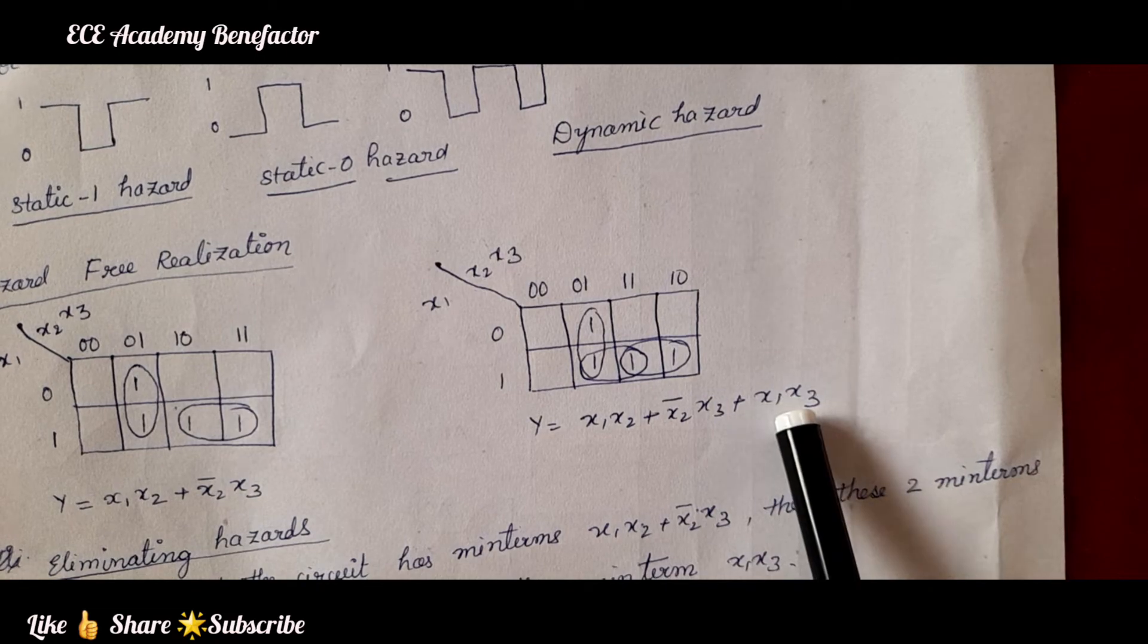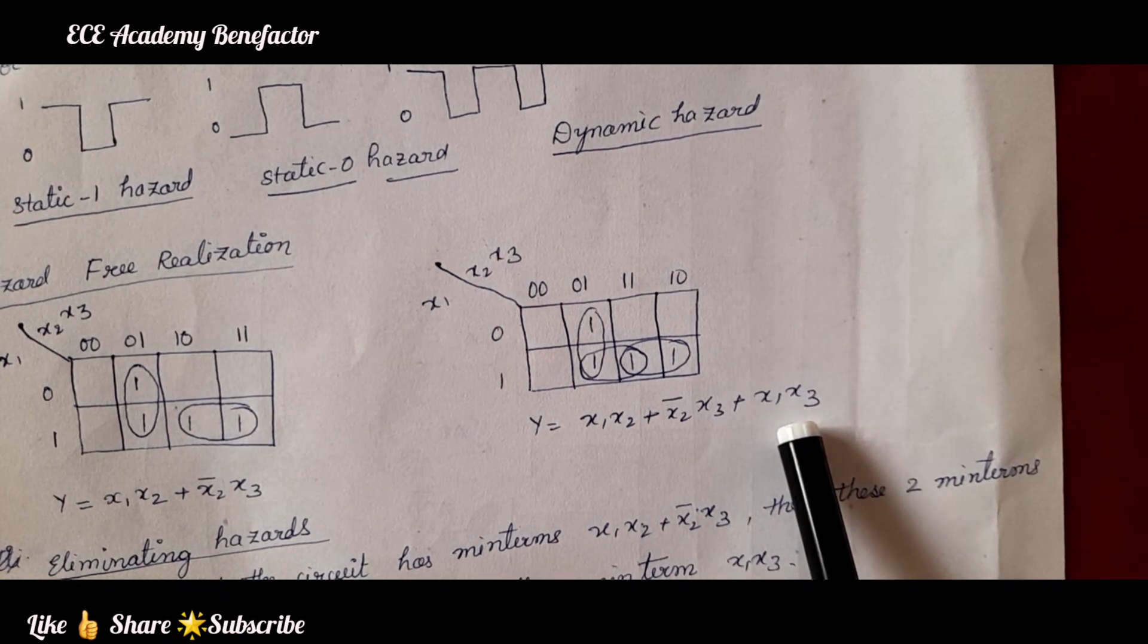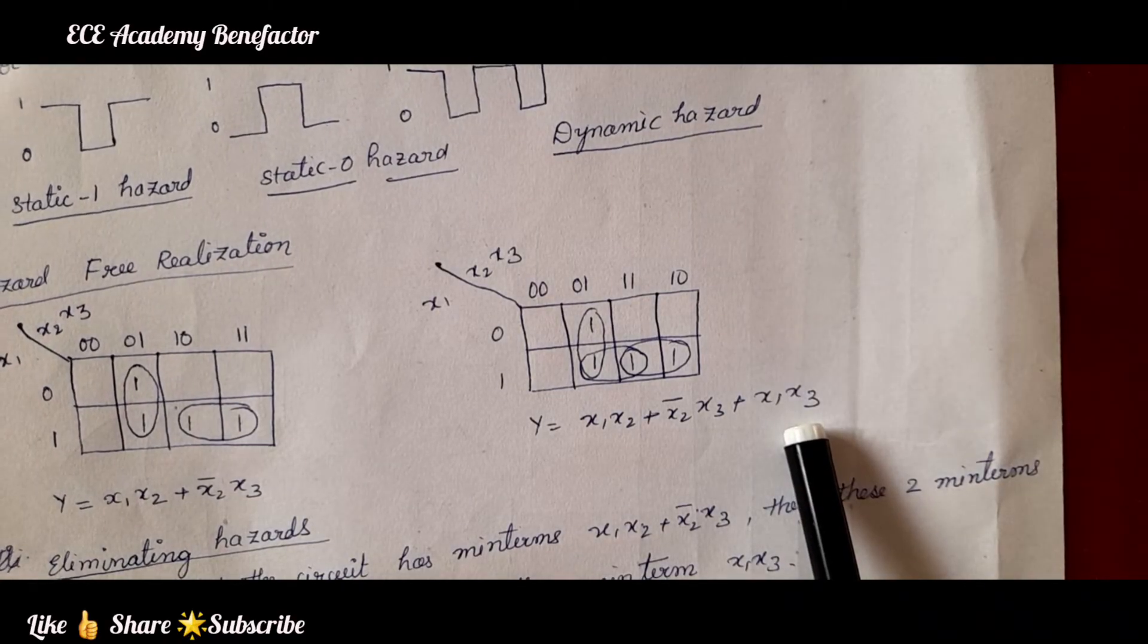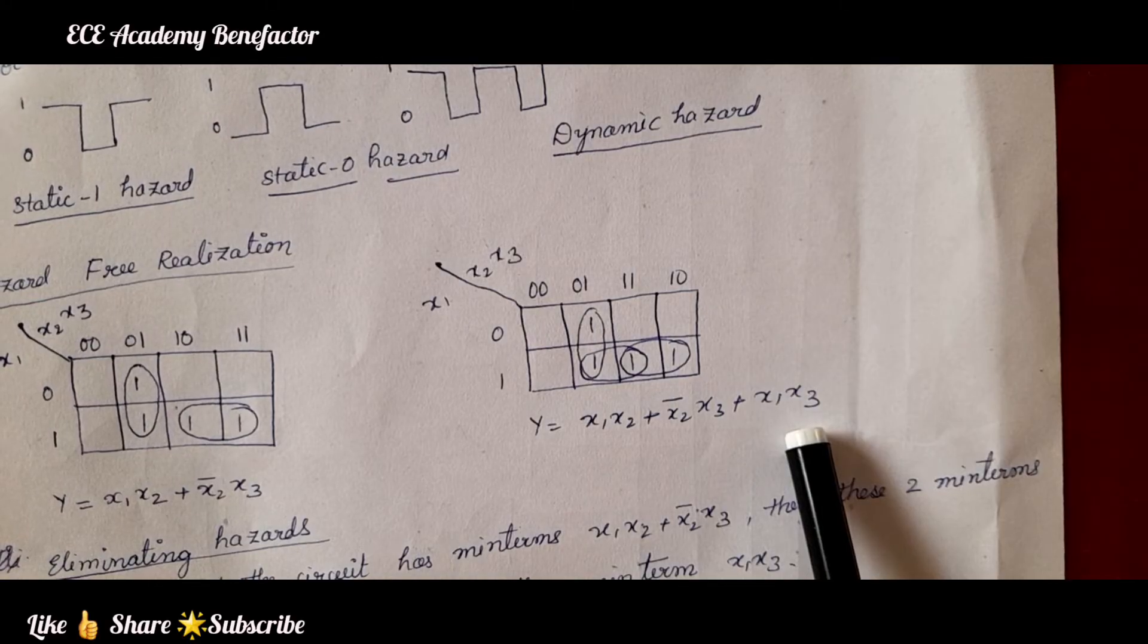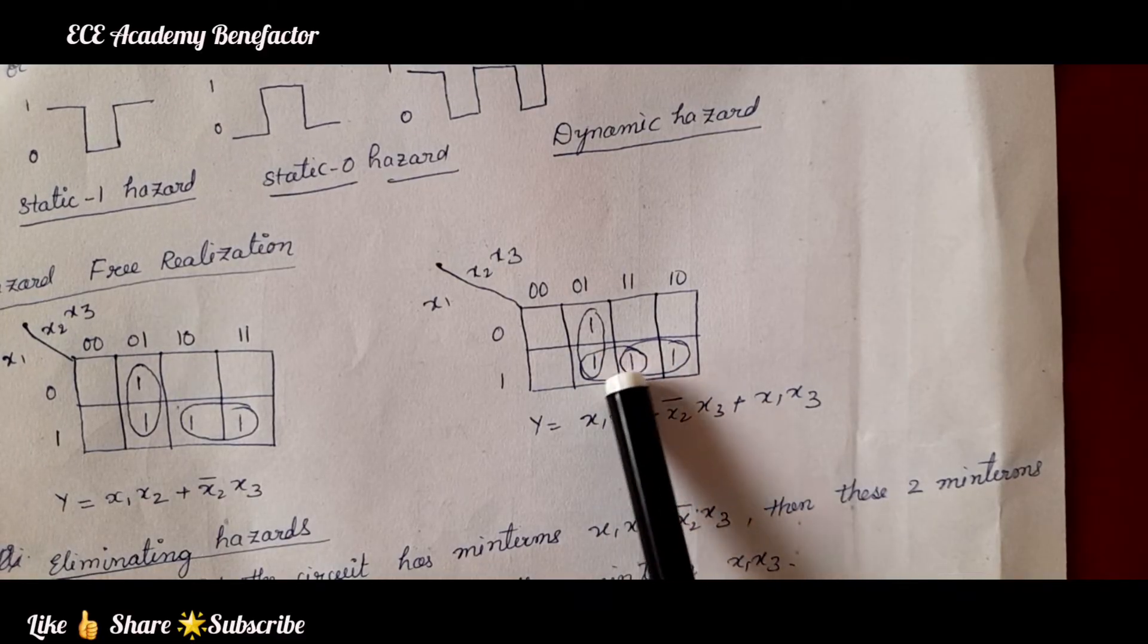So, it is resulting in the additional AND gate. It is increasing the complexity of the logic circuit as well as the cost is increased, but to avoid the malfunctioning of the circuit to make it hazard free, it is required to do the enclosing here.